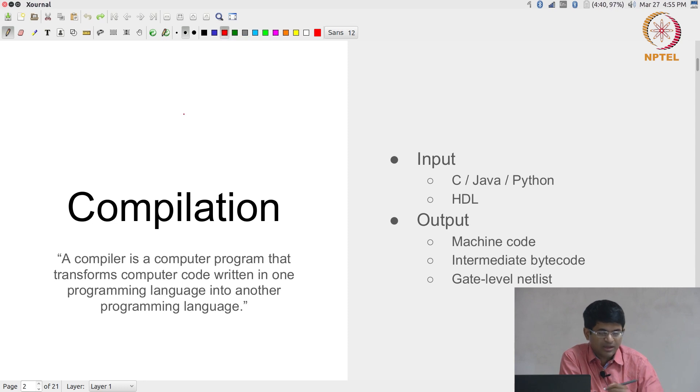Input, of course, for a compiler could be a number of different types of languages - any programming language that we are typically familiar with. C is probably the first language that we come across which requires compilation, or Java, depending on whether you did C or Java in school.